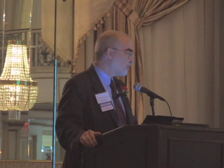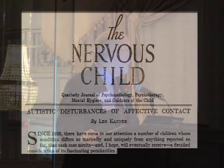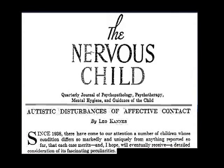He begins this paper, which was published in 1943 — and that's important, because it says the paper was five years gestating before he put it into print. He says: 'Since 1938, there have come to our attention a number of children whose condition differs so markedly and uniquely from anything reported so far that each case merits, and I hope will eventually receive, a detailed consideration of its fascinating peculiarities.'